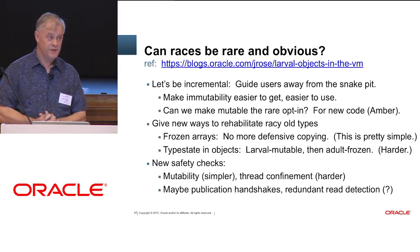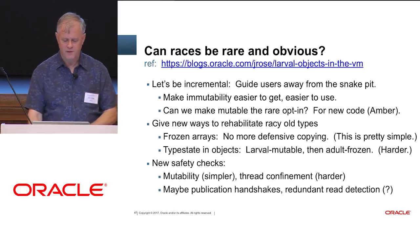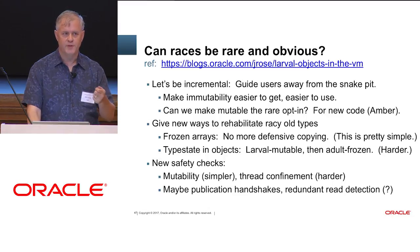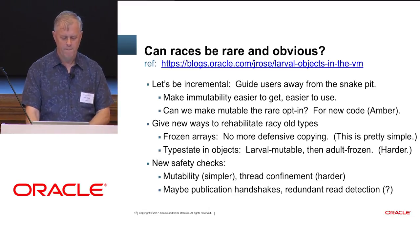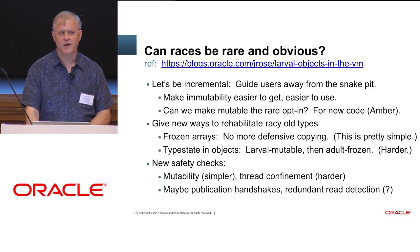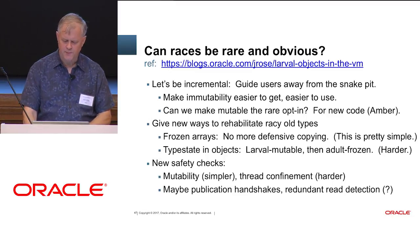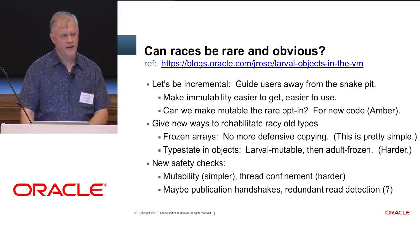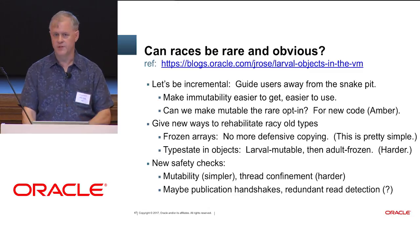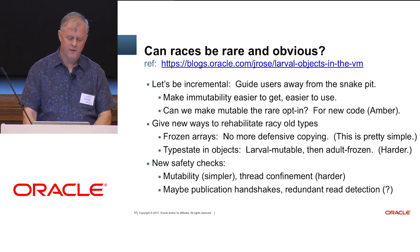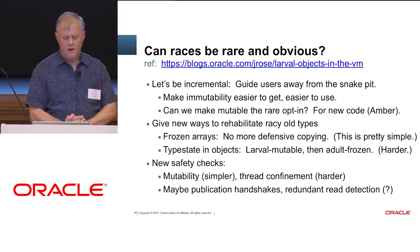Let's at least make immutability easier to do — Amber is working on this. Wouldn't it be nice if mutability were the rare opt-in? For new code, we can do that. We can rehabilitate racy old types, maybe. Arrays are a thorn in our side because they're a special case for everything — let's freeze them, let's make them freezable at least. That's pretty simple. Harder would be defining some type state that would make objects freezable also. Some parts of Valhalla will help with this.